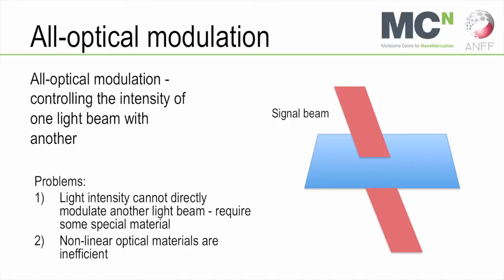So with all-optical modulation, the idea is to control the intensity of one light beam with another beam. The concept is you have some sort of signal beam which is represented there on your right, and then you shine some sort of control beam which then changes the intensity or phase of that signal beam. The problem is that light just passes through itself unaffected. One way that people do it is they use a non-linear optical material. You shine light on this material and it changes its refractive index and that modulates another light beam passing through it. But that effect isn't terribly strong.